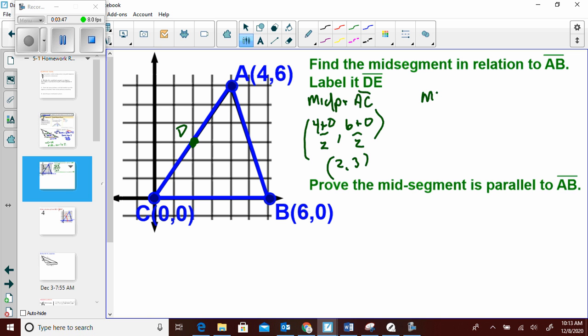Then I need the midpoint of BC. Right? Because it's in relation to AB. So we have to find the midpoint of the opposite two sides. 6 plus 0 over 2. 0 plus 0 over 2. 3, 0.